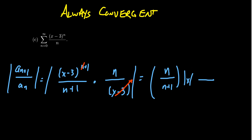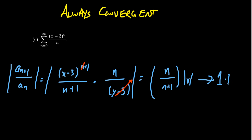Taking the limit as N goes to infinity, the expression N over (N+1) goes to 1, giving 1 times the absolute value of X minus 3. And now when is the absolute value of X minus 3 less than 1? This is the key question. The previous two examples didn't depend on the choice of X, but this one does.